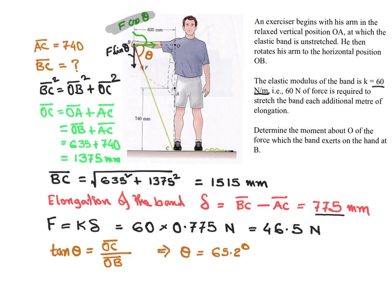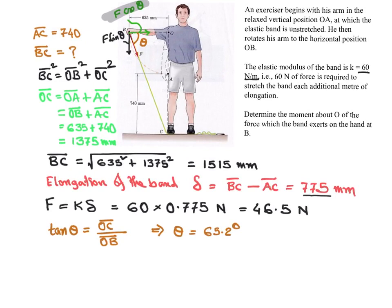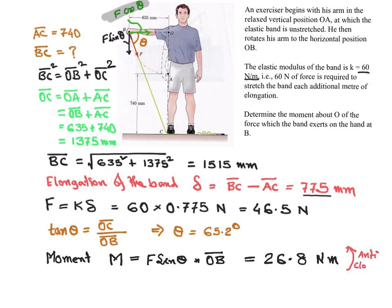To calculate the moment, what we need to multiply is F sine theta times the distance. So the moment that we are interested in, M, is equal to F sine theta times the distance OB. If you do all of these together, you will get an answer as 26.8 Newton meter, and it will act in the anti-clockwise direction.